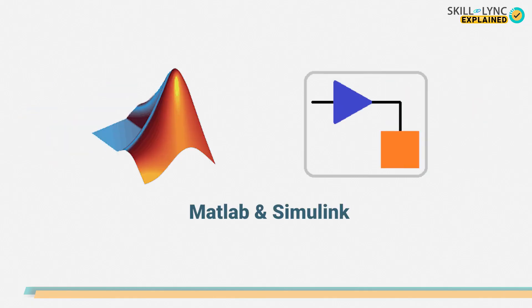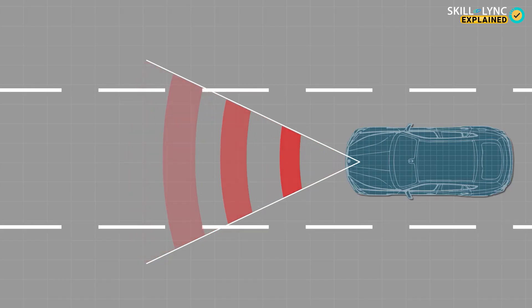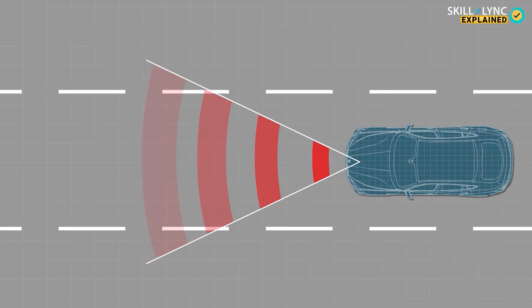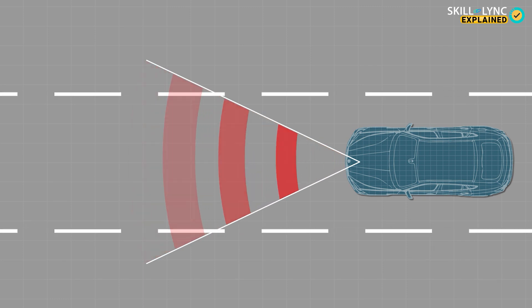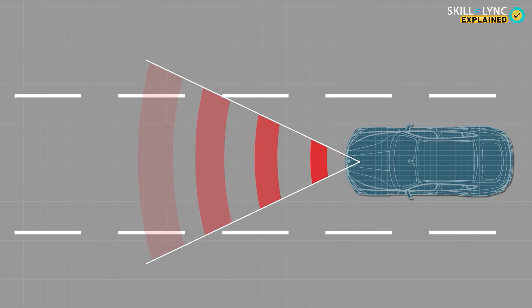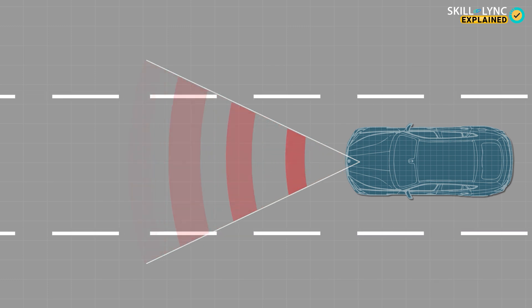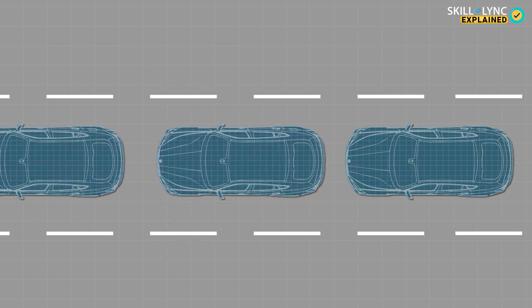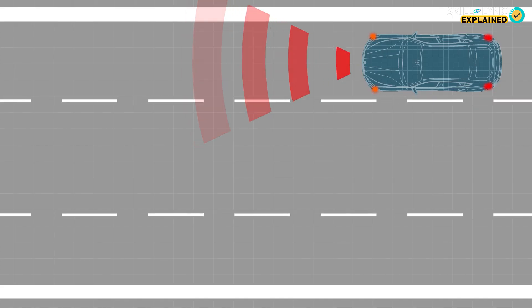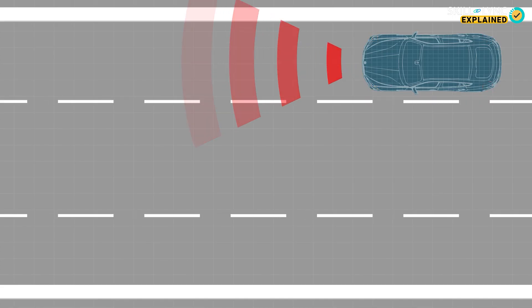ADAS technology uses tools like MATLAB and Simulink for sensing and developing a response to obstacles. To give you a better view of how an ADAS system works: let's say you're driving on the road and aren't paying attention, and the car in front of you has stopped. The ADAS system will recognize this with its sensing technology and will automatically apply the brakes.